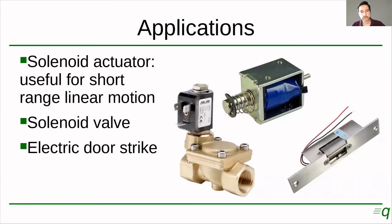Another application is a solenoid valve, which is something like this. This could be for water or for air. You would connect water here — this is the inlet and this is the outlet. So you connect a water hose or pipe over here and you can control the flow of water by turning on and off this electromagnet, which actuates in a very similar way to the solenoid actuator, only it is coupled with the mechanism inside the valve that will stop or allow the flow of water or air. These are very used in irrigation systems — you may have one of these in your house if you have an automatic irrigation system.